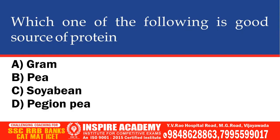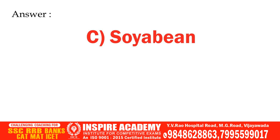Which one of the following is a good source of protein? Options: Gram, Pea, Soya bean. The correct option is Soya bean.